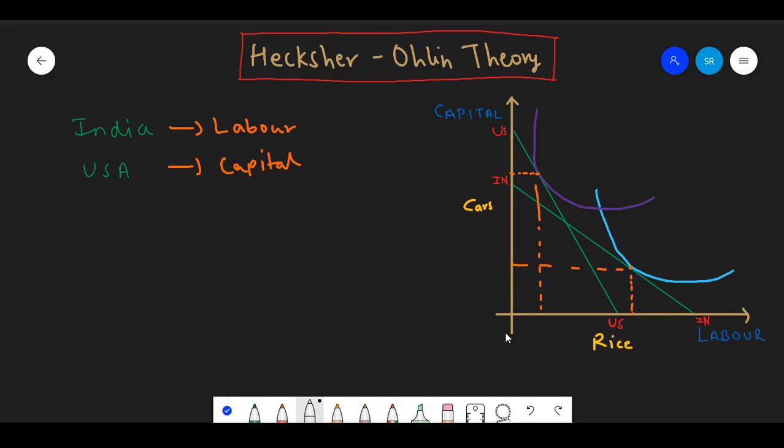India needs O-Q of labor and O-R of capital to produce 1000 kgs of rice, whereas the US requires O-N units of capital and O-N units of labor to produce 5 cars. If India were to produce 5 cars, then it will have to significantly increase its budget to do so, something it can't afford.